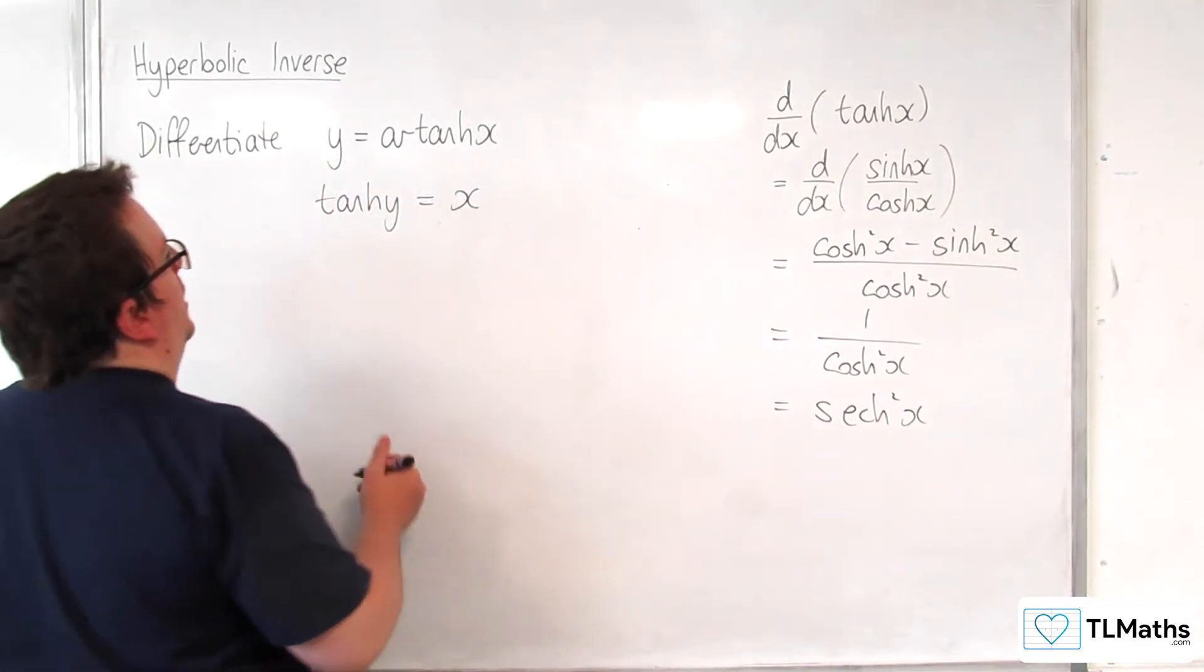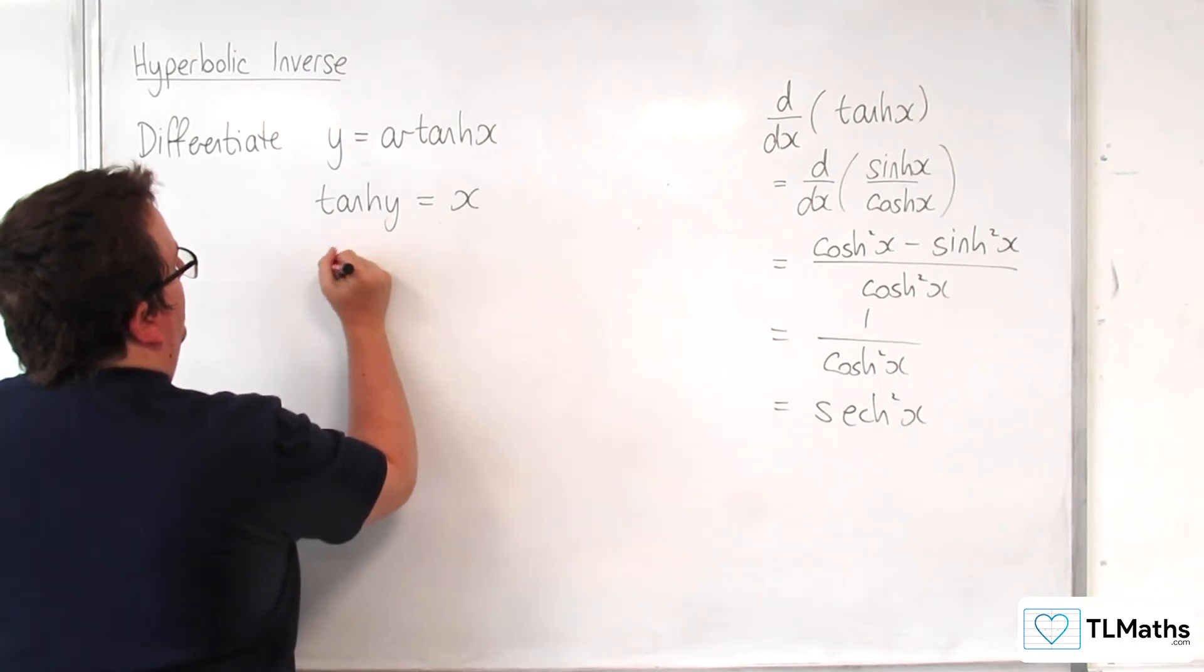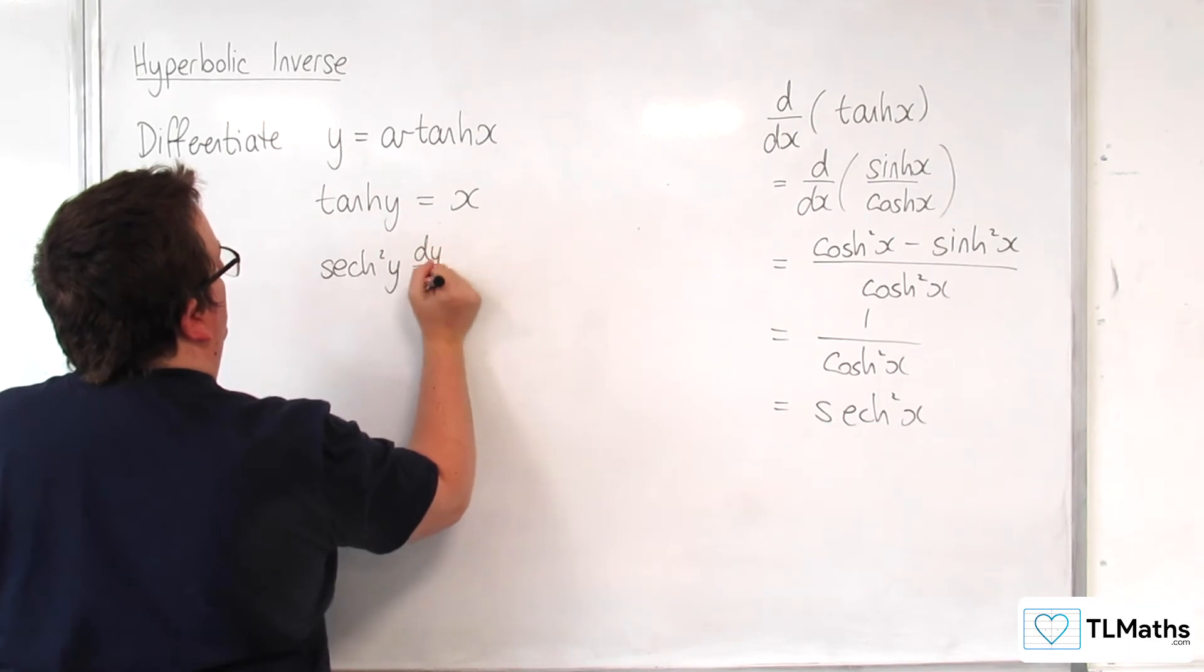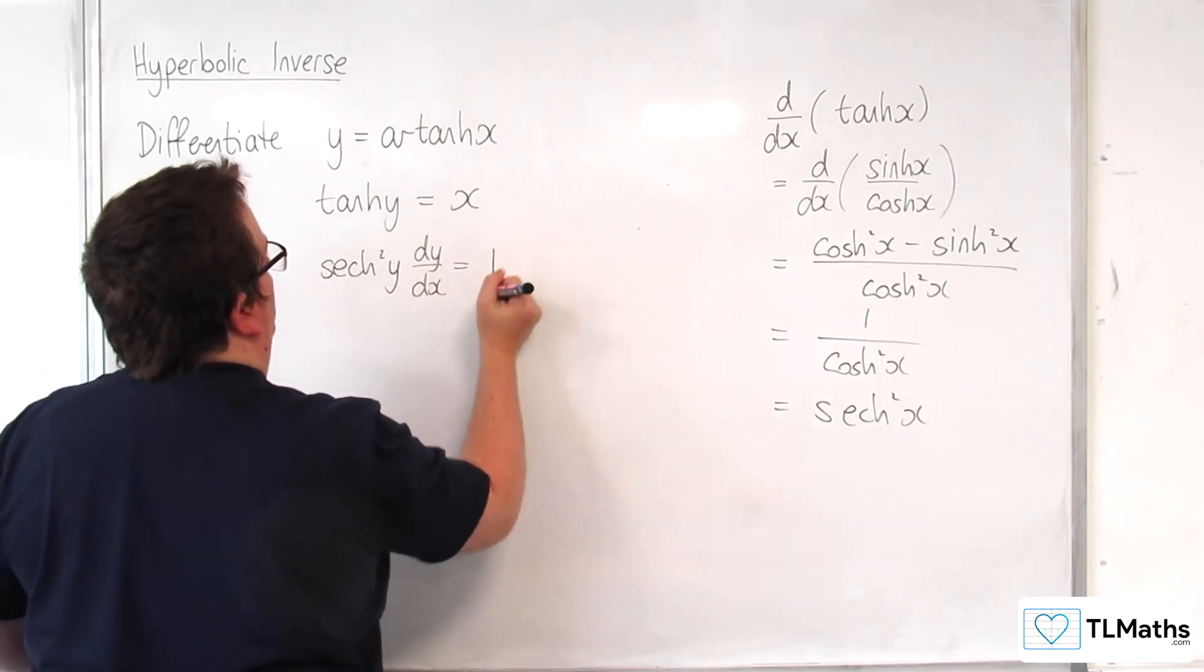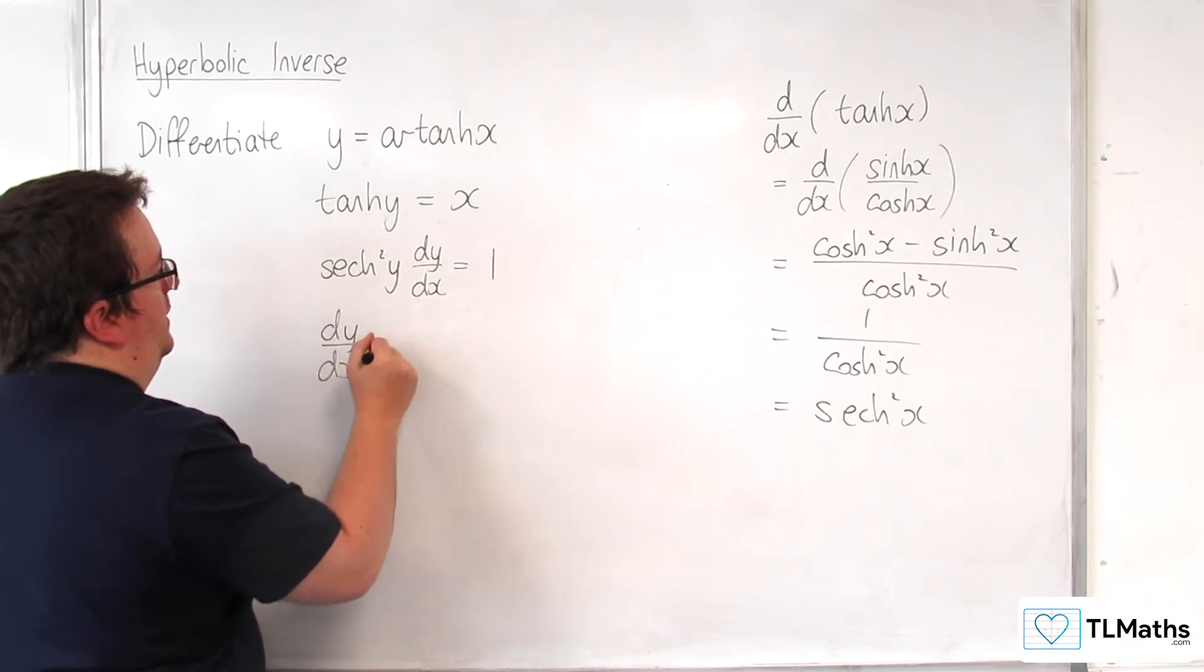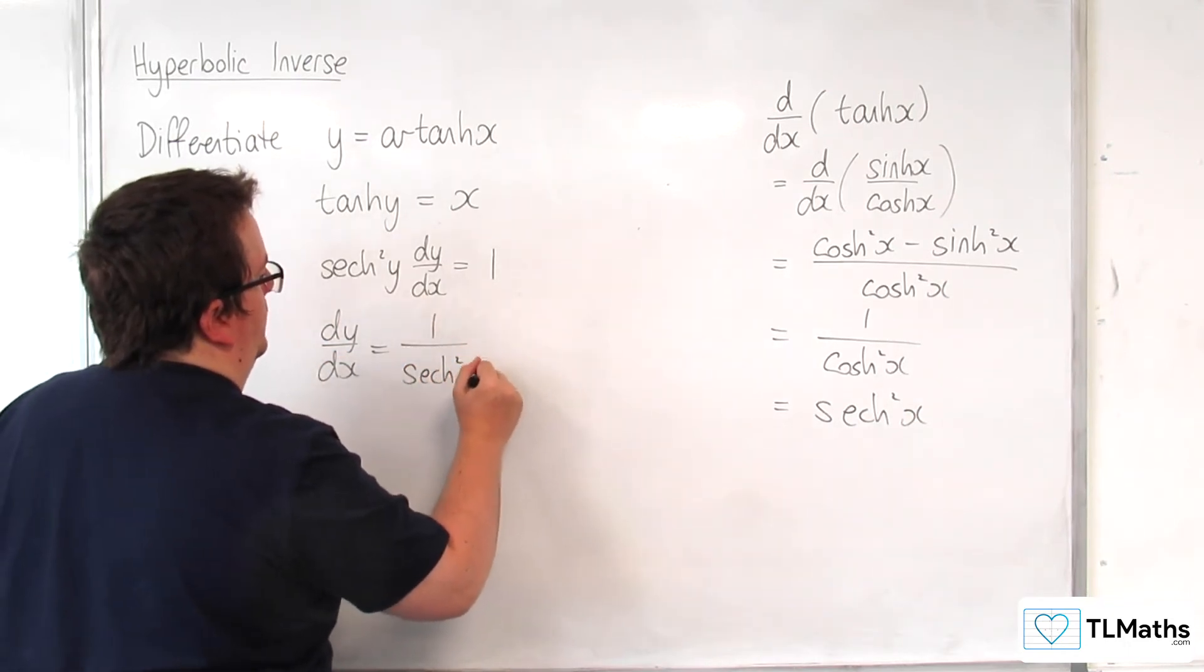Okay, so differentiating both sides implicitly will get us sech squared y, dy by dx is equal to 1. So dy by dx is equal to 1 over sech squared y.